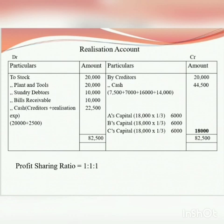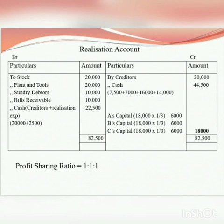The total loss accounts to Rs. 18,000, so each partner gets 1/3rd, which is Rs. 6,000 each. Since the loss accounts are transferred to the capital accounts, A's capital account gets Rs. 6,000, B's capital gets Rs. 6,000, and C's capital gets Rs. 6,000.